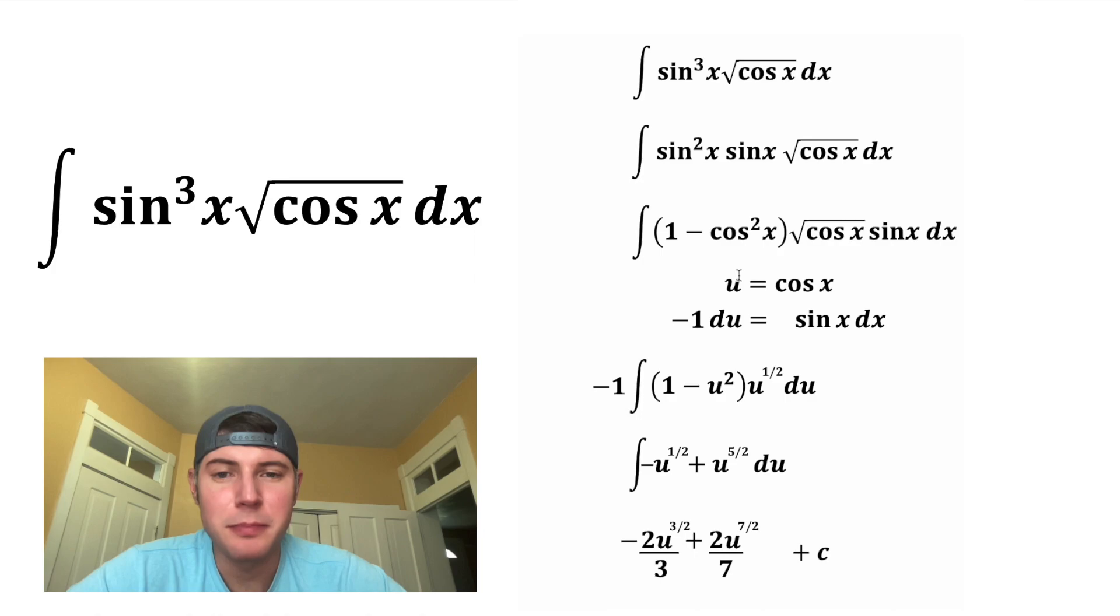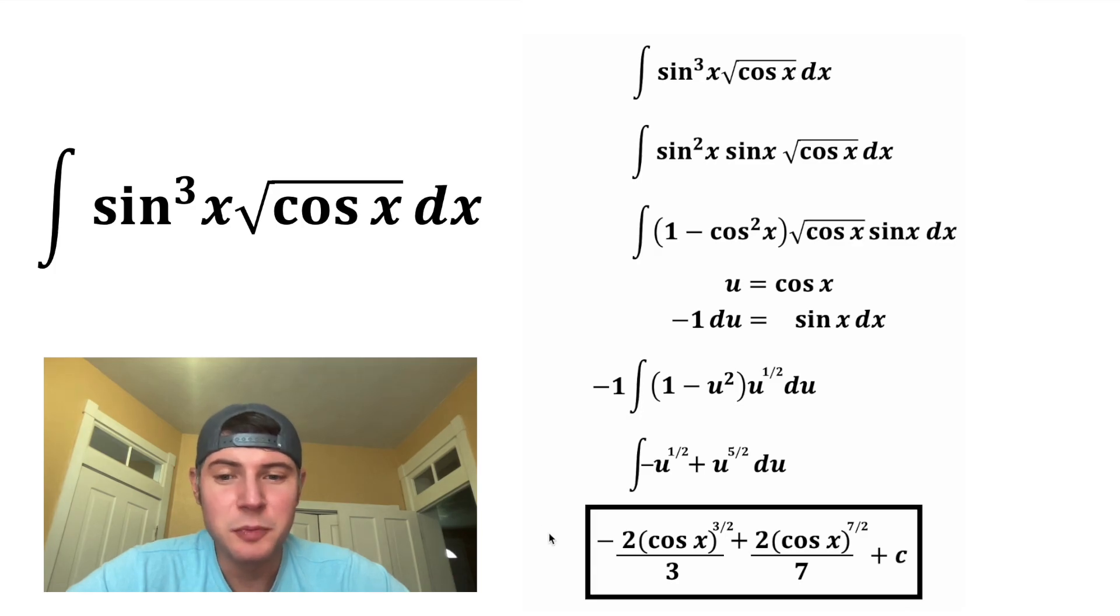Let's plug cosine of x back in for u. This u will become cosine of x, and this u will become cosine of x. And now we're done. Let's put a box around it. This indefinite integral is equal to this.